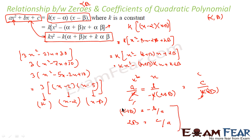So we have got: α + β = −B/A, and α·β = C/A, where α and β are the zeros of the quadratic polynomial and A, B, C are the coefficients. Thus we have derived the relationship between zeros and coefficients of the quadratic polynomial.